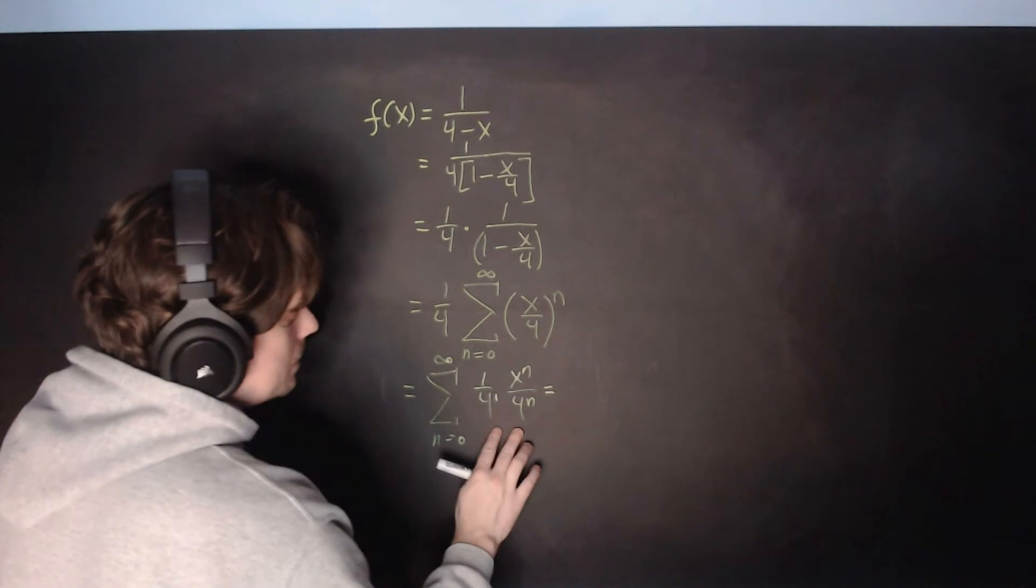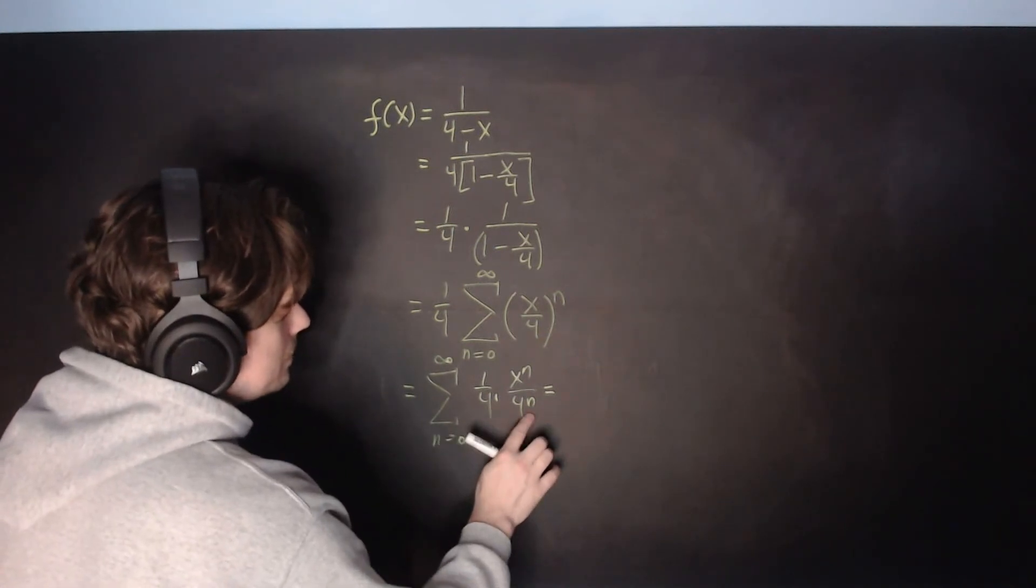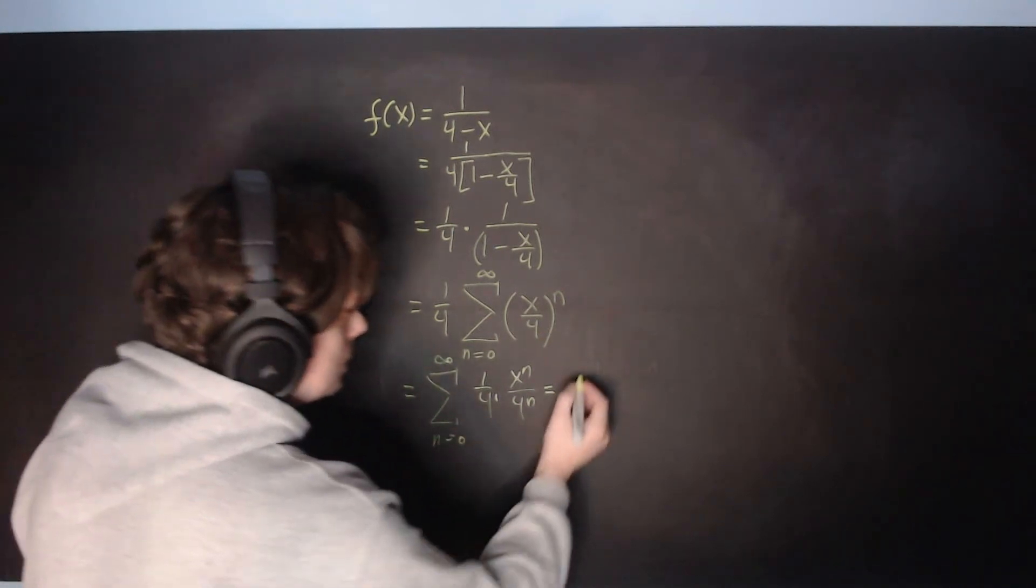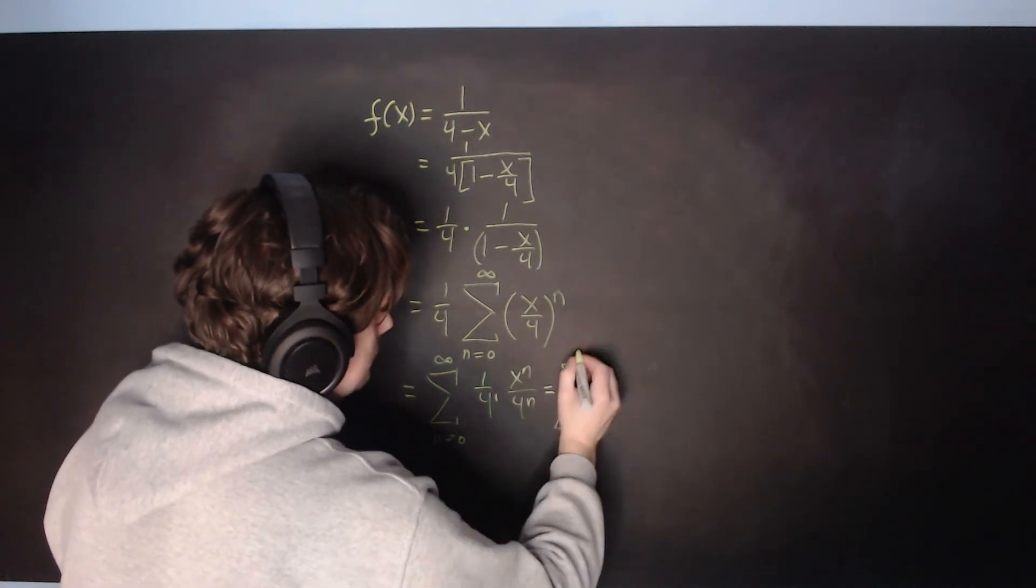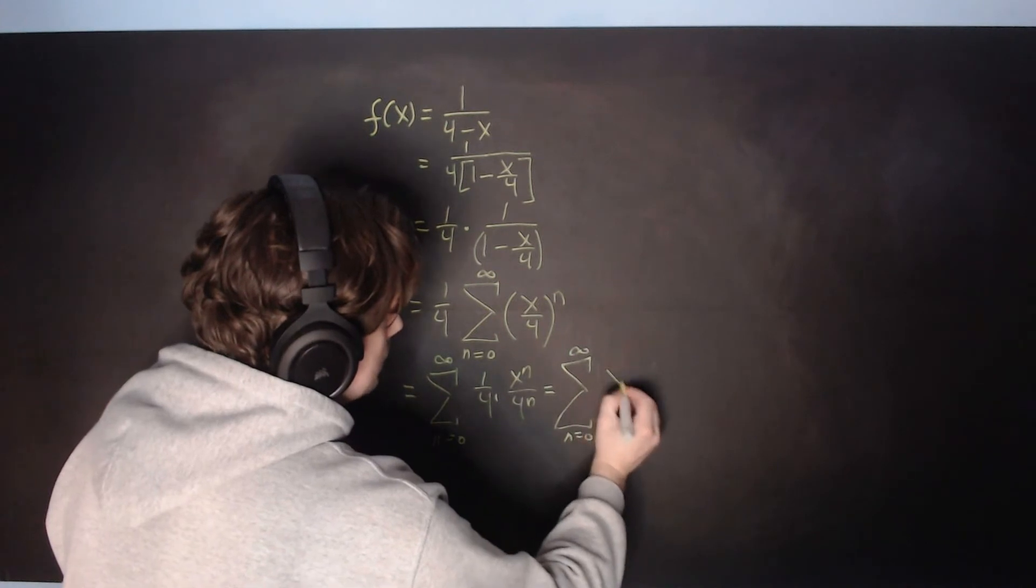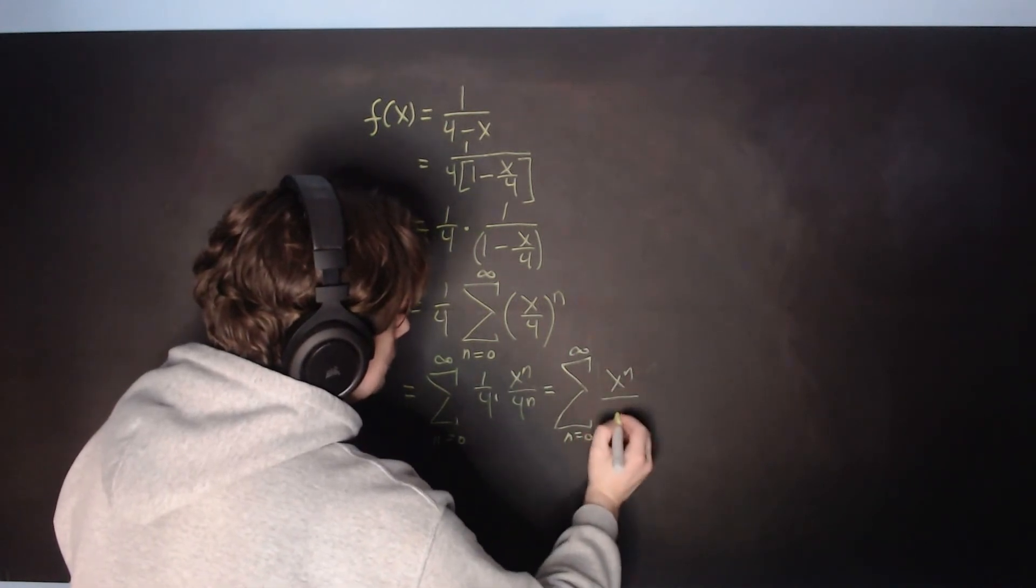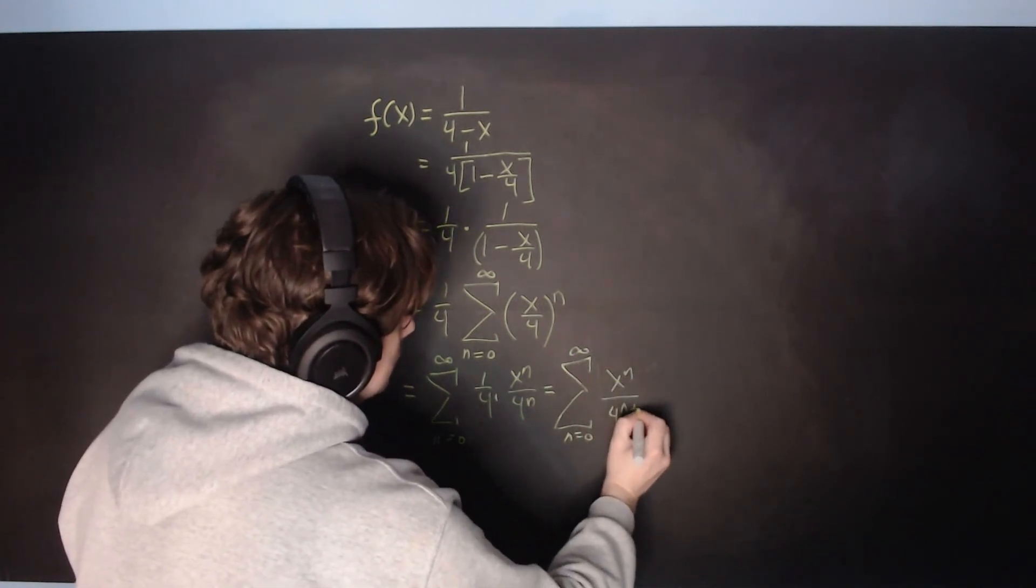Now you can clean this up, so 4 to the 1st times 4 to the n is 4 to the n plus 1. So it's going to be the summation notation from 0 to positive infinity, and then x to the n over 4 to the n plus 1.